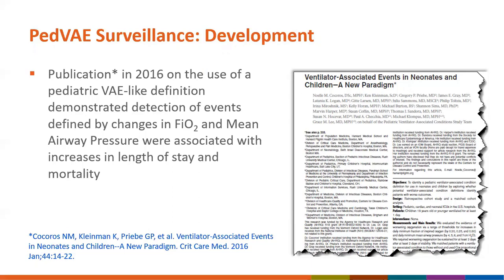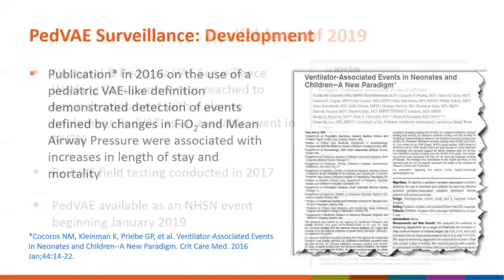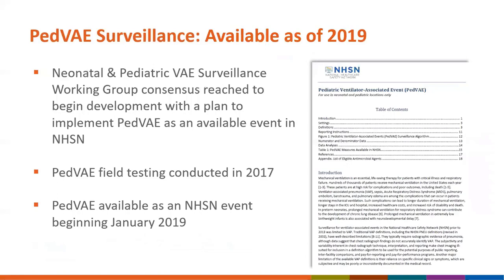Additional information came in a publication from Critical Care Medicine in 2016. The publication showed that using a pediatric VAE-like definition — events defined by changes in FiO2 and mean airway pressure, or MAP — could be detected, and these events were associated with an increase in length of stay and with mortality in those pediatric and neonatal populations. Given this information, the working group decided to move ahead in developing a pediatric VAE protocol for NHSN. NHSN piloted and field-tested this PVAE protocol in 2017, and the event became available for use in 2019.